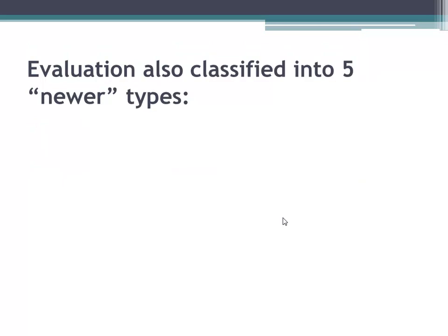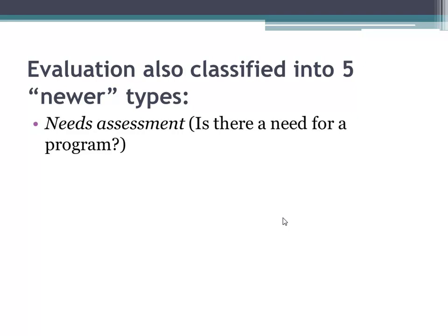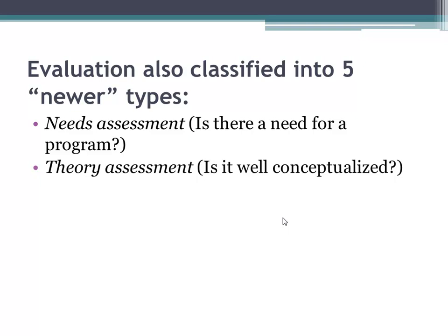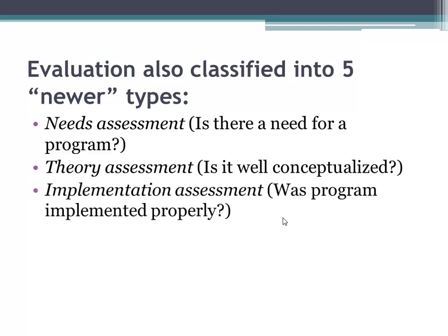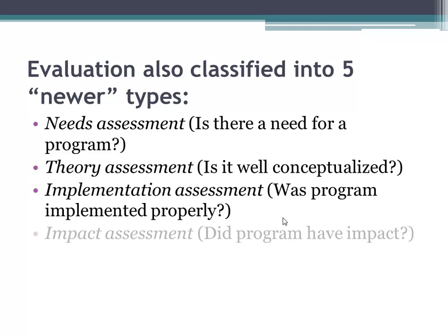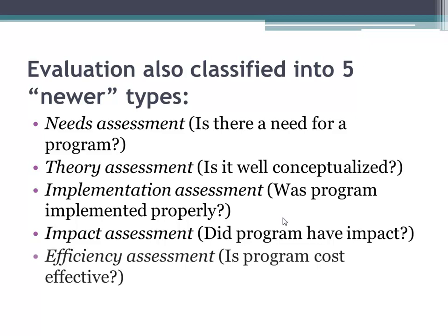A newer and currently popular way to classify evaluation is to divide it into five types. Needs assessment answers the question: Is there a need for this type of program? Theory assessment asks: Is this program conceptualized in a way that it should work? Implementation assessment asks: Was this program implemented properly and according to the program plan? Impact assessment asks: Did this program have an impact on its intended targets? Efficiency assessment asks: Is this program cost effective?